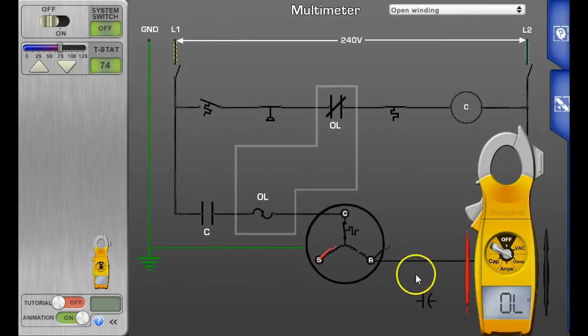That's open as well. Now let's take a look at start to common—we have 10 ohms. So we know that the start winding is good, the run winding is open, and you will have to condemn this compressor.